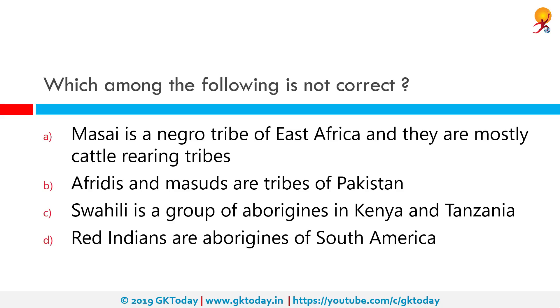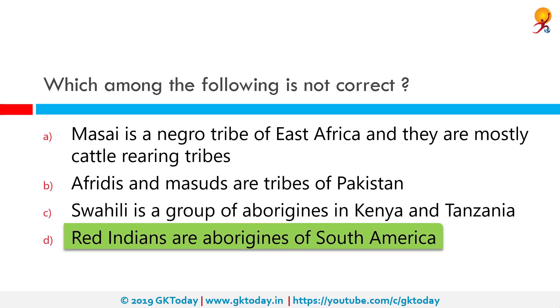Which among the following is not correct? Option D here is incorrect. Red Indians are aborigines of North America and not of South America.